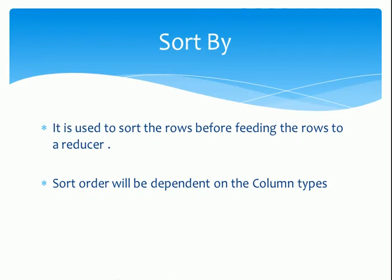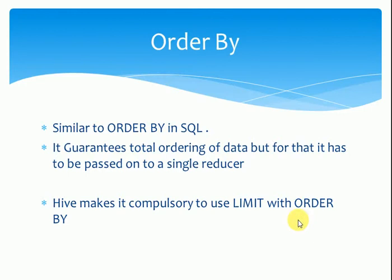ORDER BY is similar to ORDER BY in SQL. In Hive, ORDER BY guarantees total ordering of data, but to do so it must pass all data through a single reducer. This is normally unacceptable for large datasets, and therefore in restricted mode, Hive makes it compulsory to use LIMIT with ORDER BY so that the reducer does not get overwhelmed.